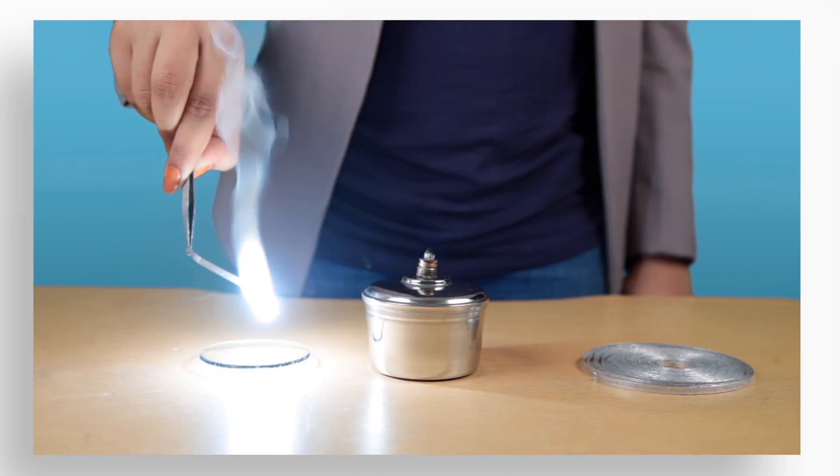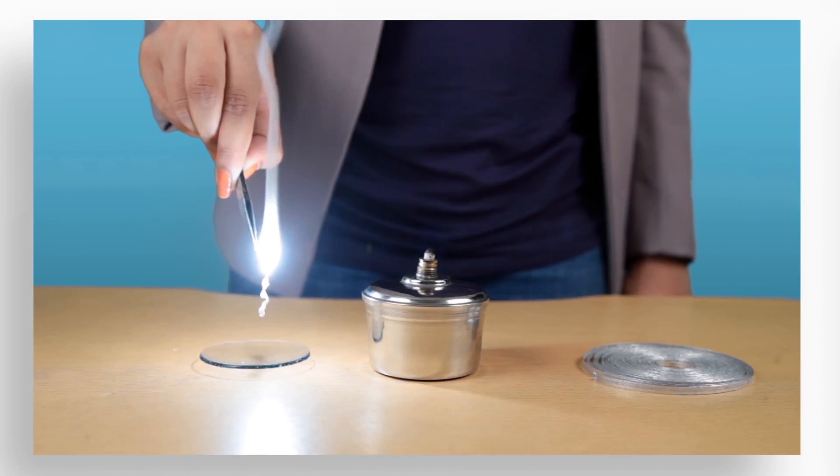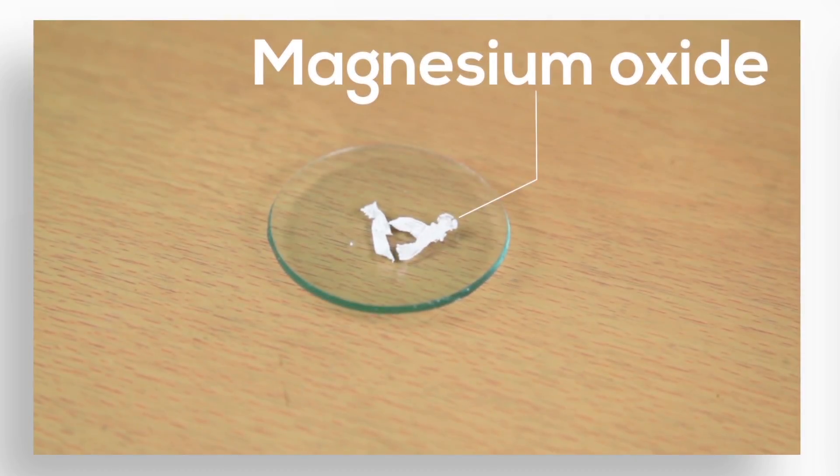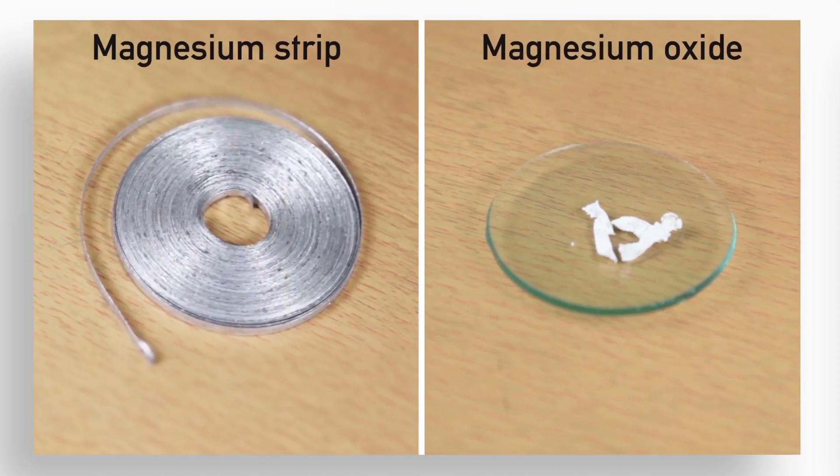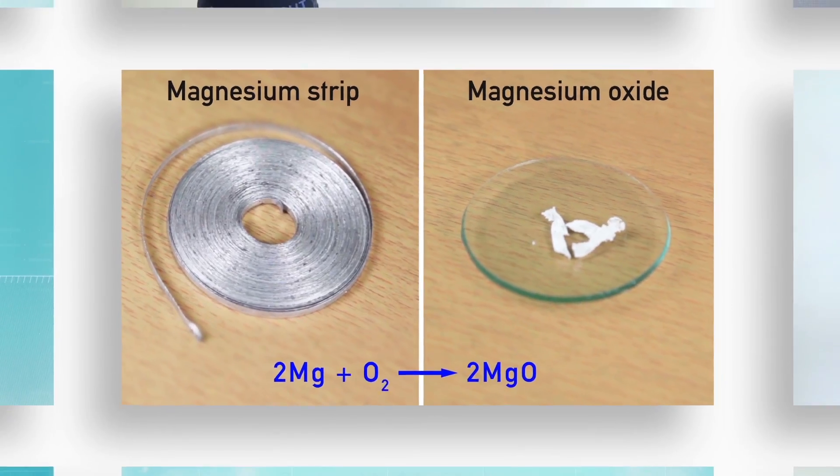We can observe that magnesium ribbon burns with a dazzling white flame and what remains at last is a white powder in the watch glass which is nothing but magnesium oxide. This burning of magnesium strip is actually a chemical change from magnesium to magnesium oxide.